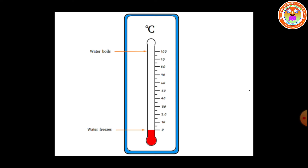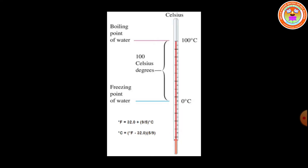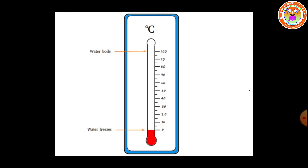I hope you have understood, students. So for the Celsius scale, how many divisions do we have? It starts from 0 and ends at 100 degree Celsius, so we will have 100 divisions. The picture shows the Celsius scale — the reading starts from 0 and ends at 100. The starting point is the water freezing point, which is 0 degree Celsius, and the end point is the water boiling point, which is 100 degree Celsius.